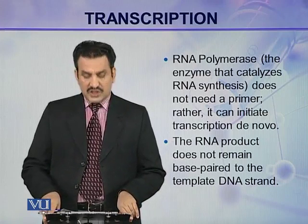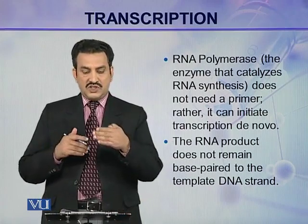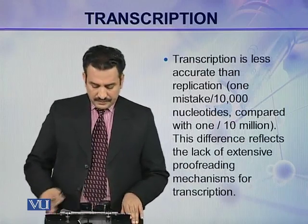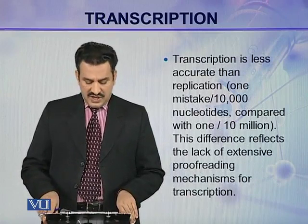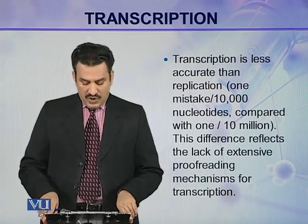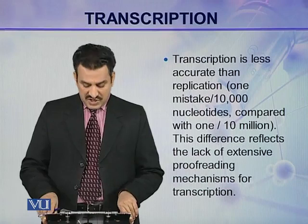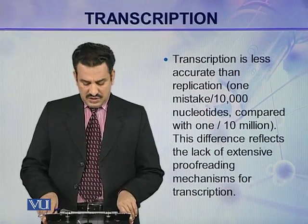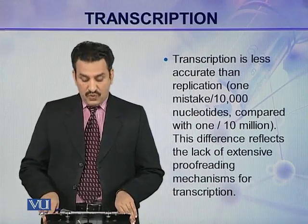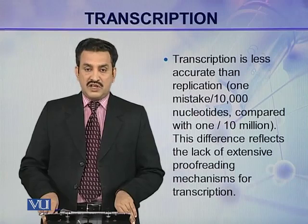The RNA product does not remain base-paired to the template DNA strand, while in the case of replication, the newly synthesized DNA strand remains base-paired with the old strand. Transcription is also less accurate than replication — there is one mistake in every 10,000 nucleotides in transcription, while there is only one mistake per 10 million nucleotides in replication. This difference in accuracy reflects the lack of an extensive proofreading mechanism during transcription, as there is a very good proofreading system in the case of replication.